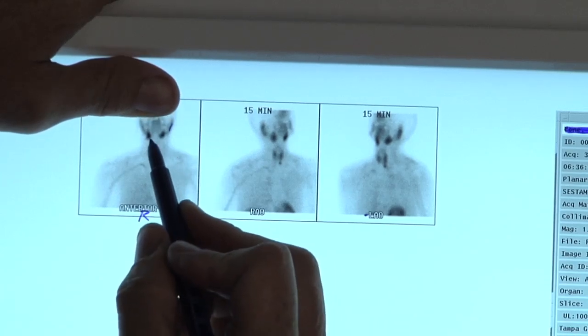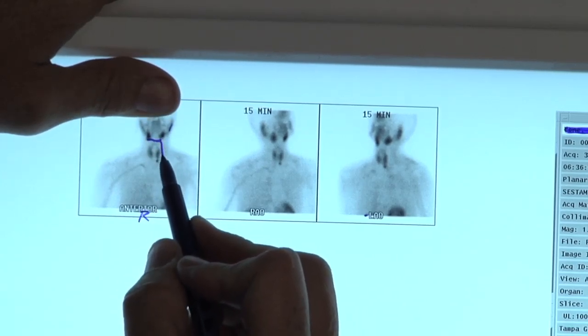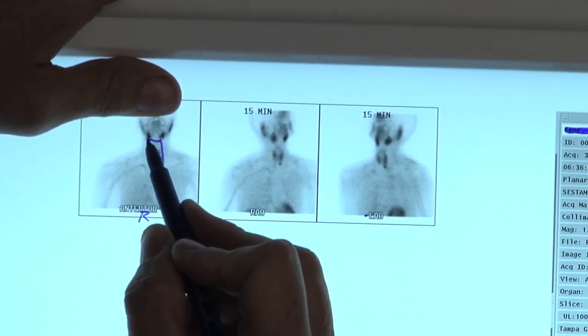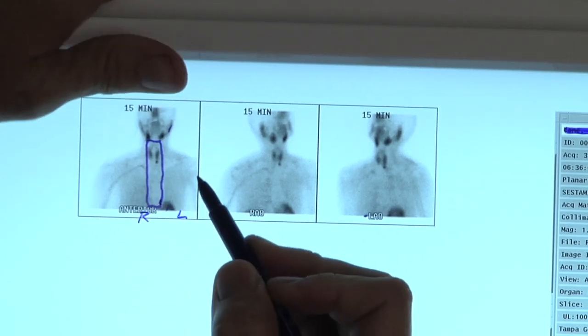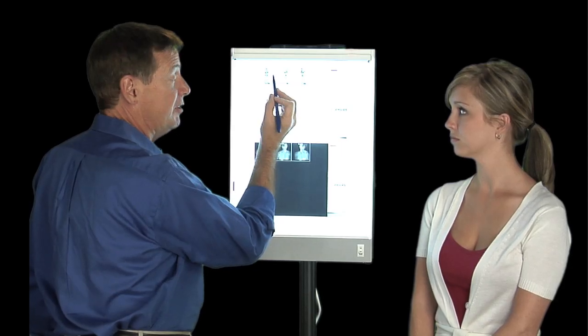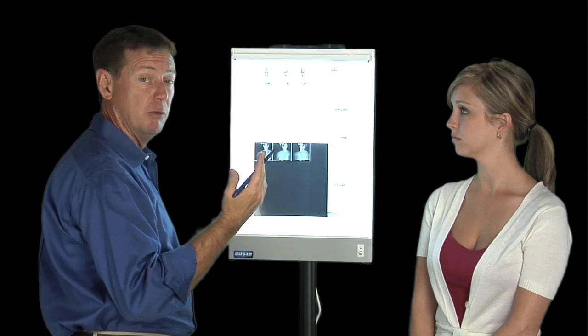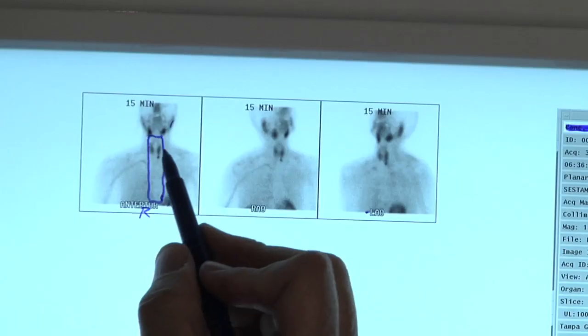Parathyroid tumors can be anywhere in this box. They're not all in the neck. They can be anywhere in this box. So, even though we say parathyroid tumors are para, or around the thyroid gland, and most of them are.